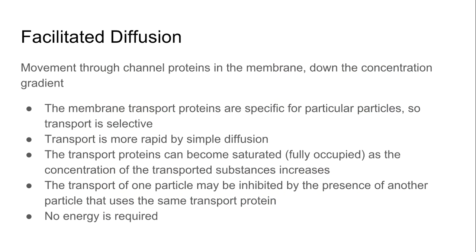There is another type of diffusion which we refer to as facilitated diffusion. No energy is being expended here, but the molecules which are diffusing are required to move through the channel proteins in the membrane. There are specific proteins for specific particles which need to move through, so we refer to this transport as being selective. The transport in this case is more rapid than simple diffusion. Sometimes these transport proteins can all become full as the concentration of the transported substance increases, and transport of one particle might be inhibited by the presence of another particle that requires the same transport protein.